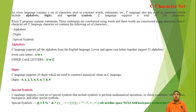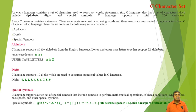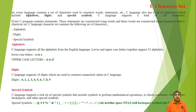C language supports a total of 256 characters. When we have to write the program we require alphabets, digits and special symbols. The character set of C language contains a set of the following characters: first is alphabet or letters, second is digits or numbers, and third is special symbols.